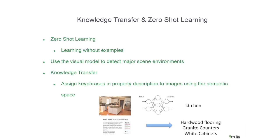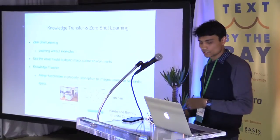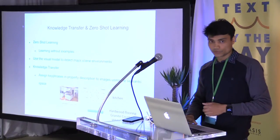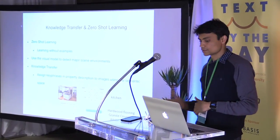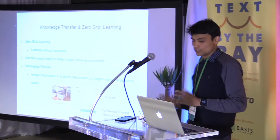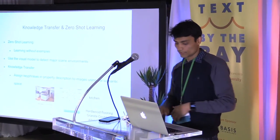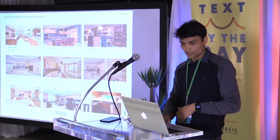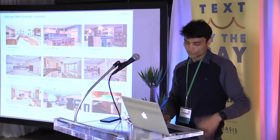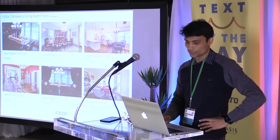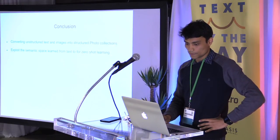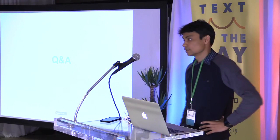To summarize: we want to do zero-shot learning — learning without labeled examples. We use a visual model to detect the major scenes, and then we assign key phrases from the property descriptions to images using the semantic knowledge we have. A few other examples: kitchens with granite countertops, crystal chandeliers. That's it — Q&A.